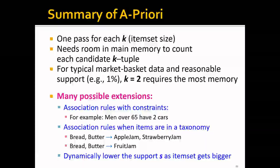And until now, we have discussed the basic version of the A-Priori algorithm. There are also many possible extensions. For example, you might be interested in association rules with constraints. For example, you might be only interested in men over 65 who have two cars, and that will limit dramatically the candidate item sets that you have to deal with.